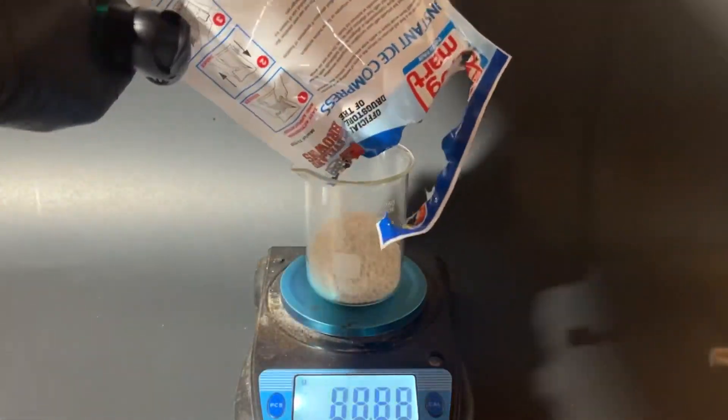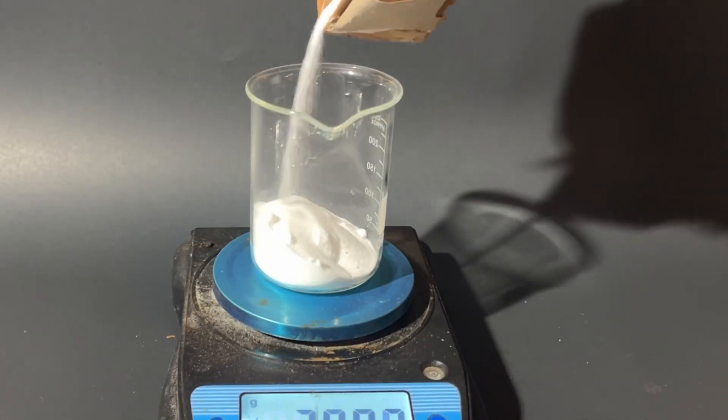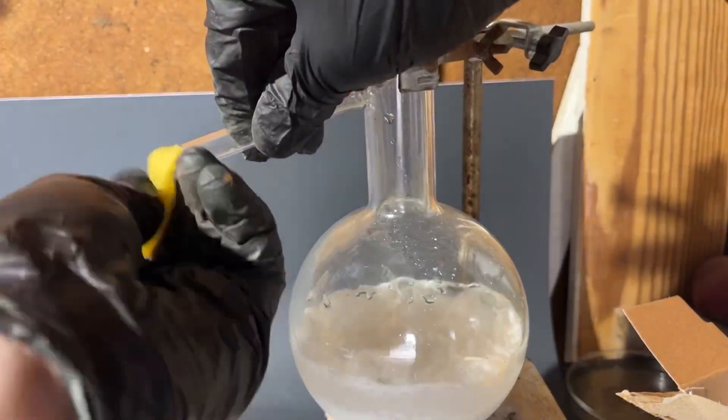First, I weigh out 80 grams of ammonium nitrate and another 80 grams of sodium bicarbonate. I add both of these chemicals into a round bottom flask, alongside about 120 milliliters of water, and I crank up the heat.